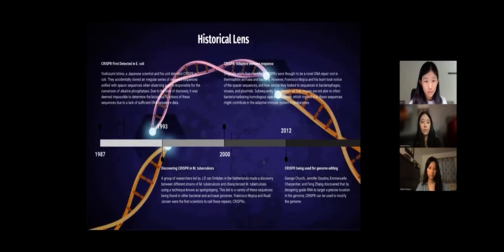In 2000, there was research for CRISPR adaptive immune response. Originally when first identified, CRISPRs were thought to be a novel DNA repair tool in thermophilic archaea and bacteria. However, Francisco Mojica and his team took notice of these spacer sequences and how similar they look to sequences in the bacteriophages, viruses, and plasmids. Subsequently, they discovered that viruses are not able to infect bacteria harboring homologous spacer sequences, which implied that these sequences might contribute in adaptive immune response systems in prokaryotes.